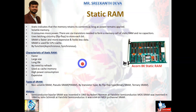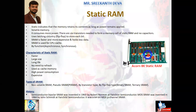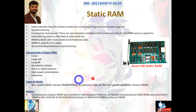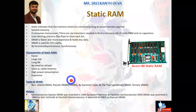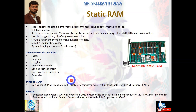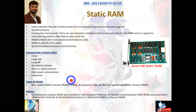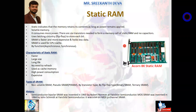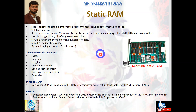Static RAM consumes more power because it requires multiple transistors — around six transistors — to form a memory cell. Static RAM is more expensive and holds less data than Dynamic RAM. It is a type of random access memory that retains its data as long as it receives power. It does not need to be refreshed on a regular basis, unlike Dynamic RAM.